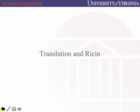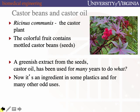We're going to talk about translation wrapped in a deadly poison called ricin. To discuss ricin, we have to talk about castor plants and the beans that they produce. The castor plant is a source of ricin.